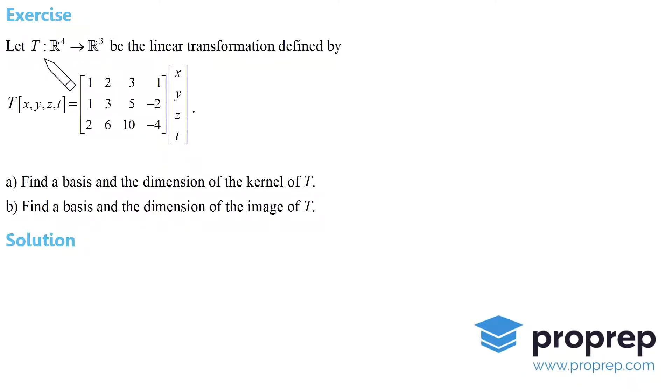Here we have a linear transformation T from R⁴ to R³, defined in matrix form. T takes a four-dimensional vector (x, y, z, t) and sends it to this.